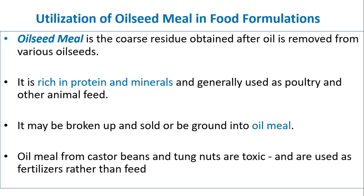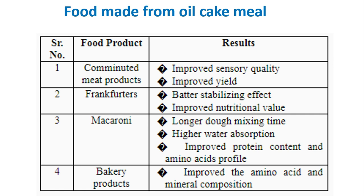Utilization of oil seed meal in food formulations: Oil seed meal is a coarse residue obtained after oil is removed from various oil seeds. It is rich in protein and minerals and is generally used as poultry and other animal feeds. It may be broken up and sold or ground into oil meal. Oil meal from castor beans and tung nuts are toxic and are used as fertilizers rather than feed. Food made from oil cake meal includes: combined meat products with improved sensory quality, improved yield, and frankfurters with better stabilizing effect.